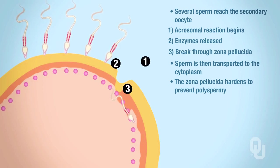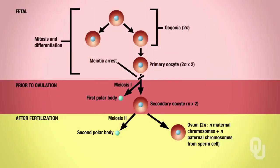You don't want multiple sperm fertilizing eggs. Looking at the diagram of oogenesis, we are now at the level after fertilization. Fertilization has stimulated meiosis II, and that's where we go from a secondary oocyte to an ovum.